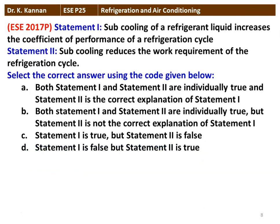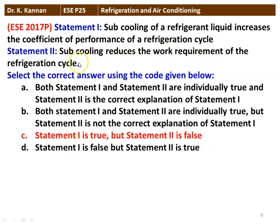The next question from the 2017 question paper — two statements: Statement one — sub-cooling of a refrigerant liquid increases the coefficient of performance of the refrigeration cycle. Statement two — sub-cooling reduces the work requirement of the refrigeration cycle. Statement one is true and statement two is false. Sub-cooling does not reduce the work requirement; instead, it increases the refrigeration effect, thereby increasing the COP of the refrigeration cycle.